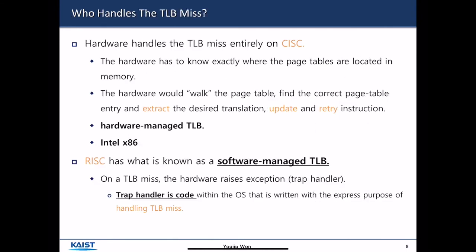There are two ways to handle a TLB miss: hardware and software. In CISC architectures like x86, hardware is responsible for handling TLB miss. To do this, the hardware has to know exactly where the page tables are located in memory. The hardware walks through the page table, finds the correct page table entry, extracts the desired translation, and retries the instruction. This is what we call hardware-managed TLB.